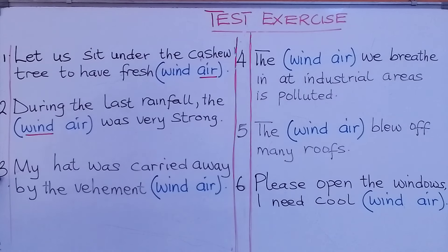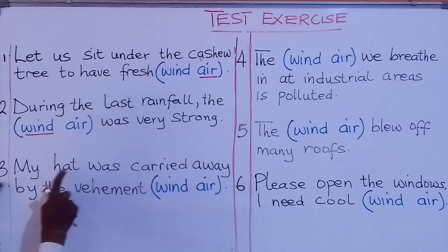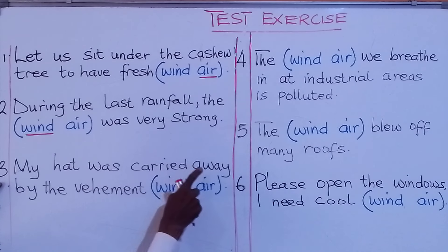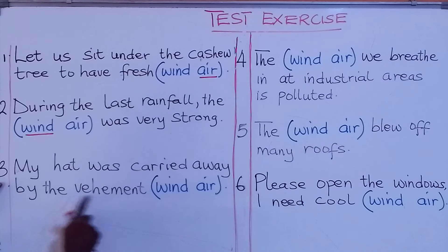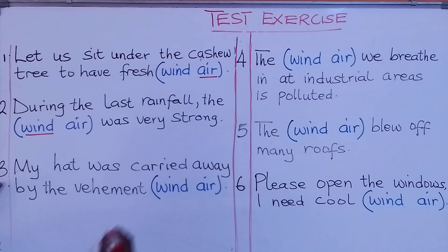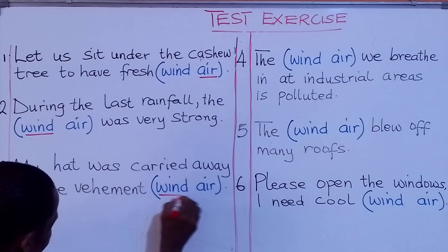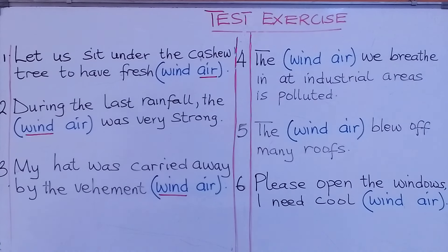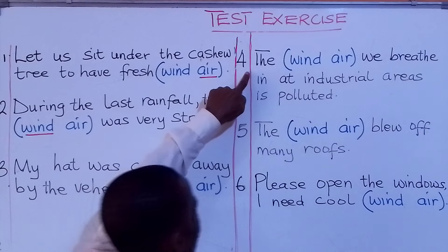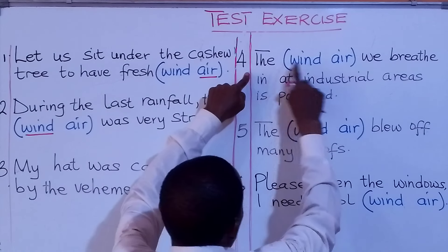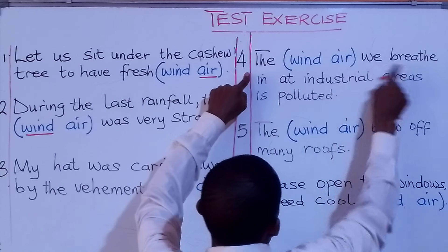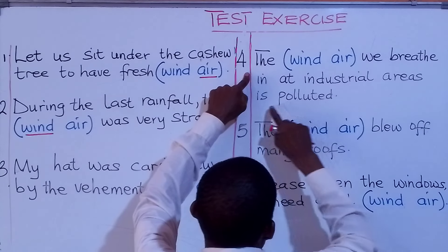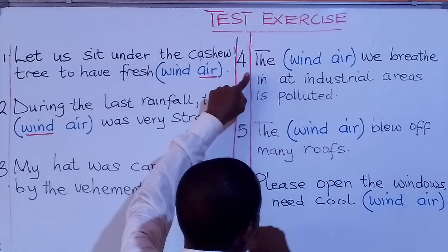Number one: 'Let us sit under the cashew tree to have fresh [wind / air].' What are we going to put there? — Fresh air. Number two: 'During the last rainfall, the [wind / air] was very strong.' What are we going to put there? — The wind was very strong.